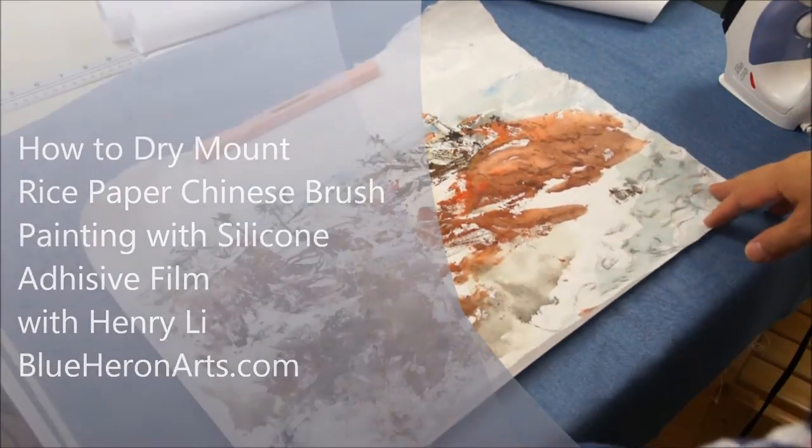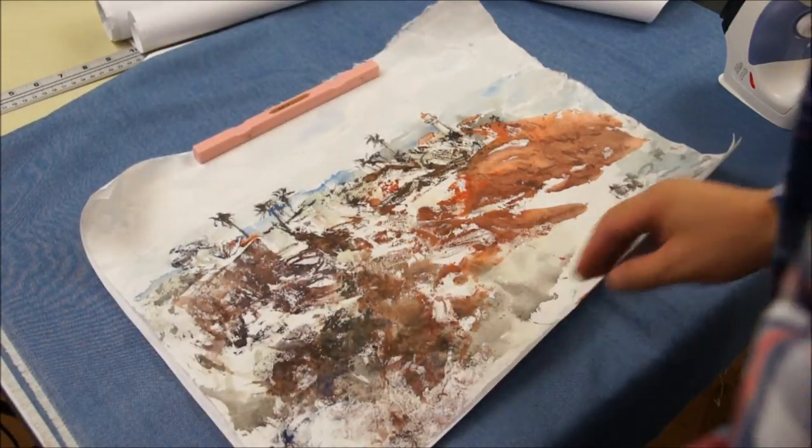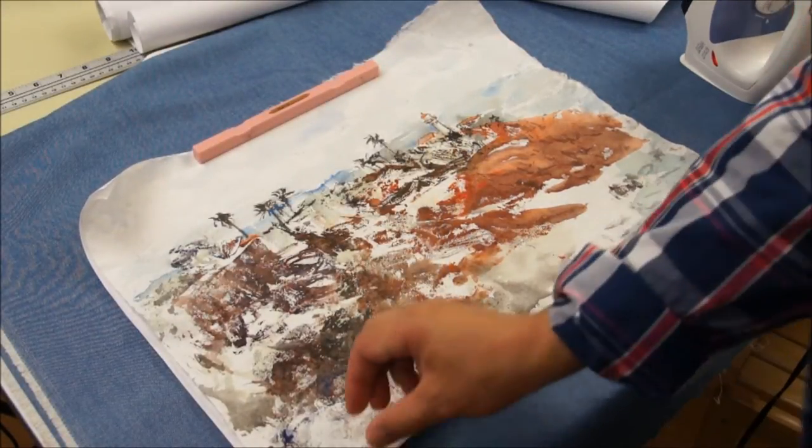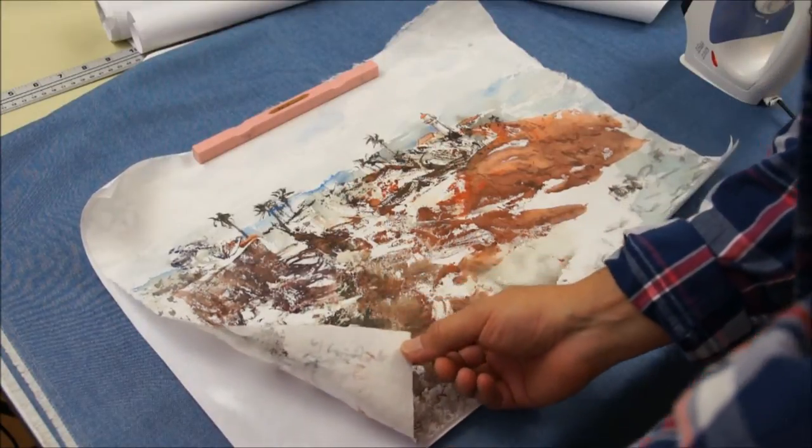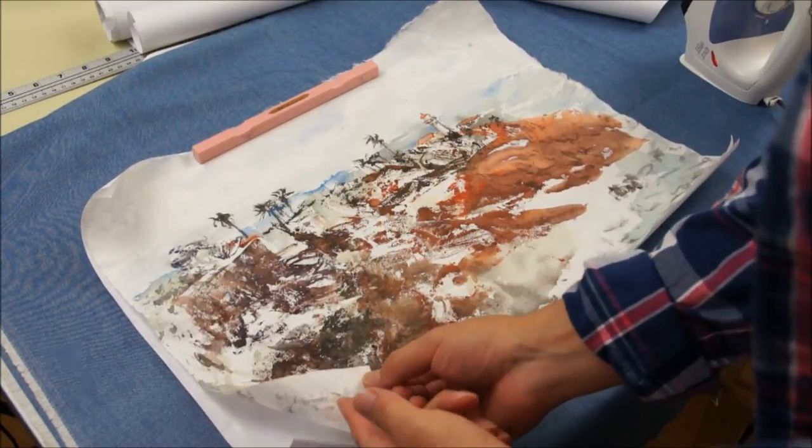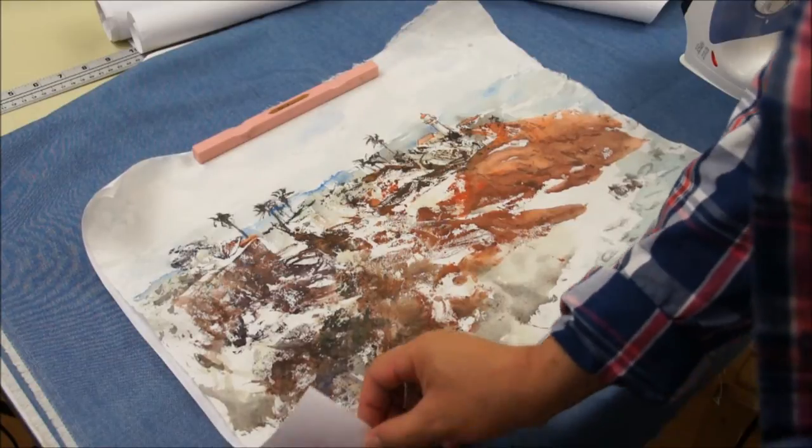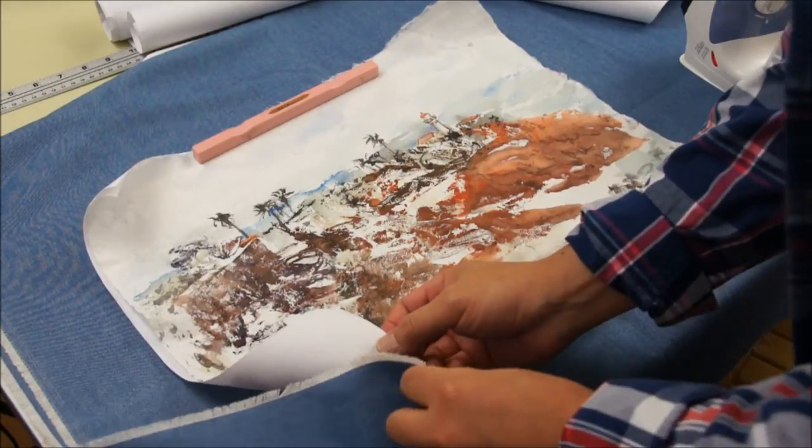Now I'm going to show you the process of dry mounting. The material we need is a silicone backing paper with adhesive film facing the back of the picture, and we place the four layers of fabric.